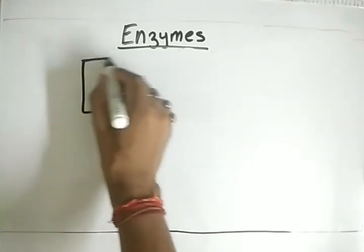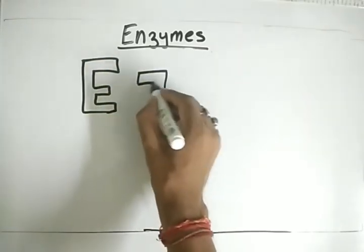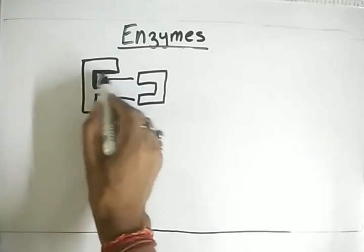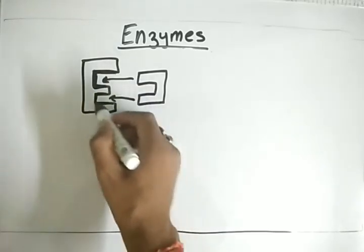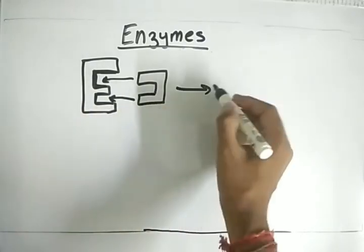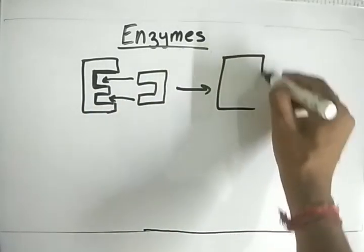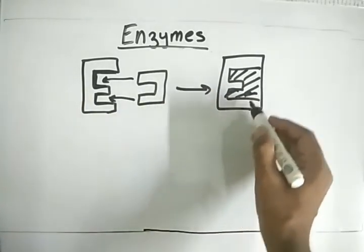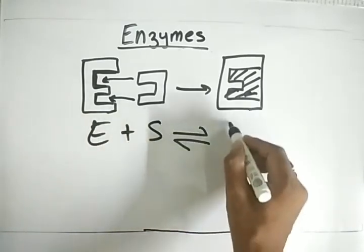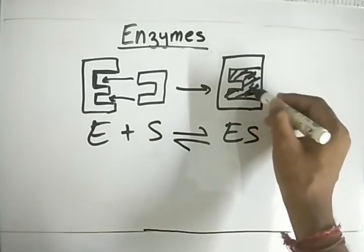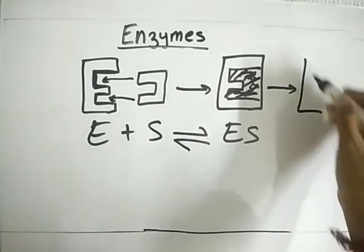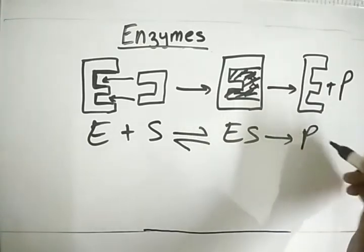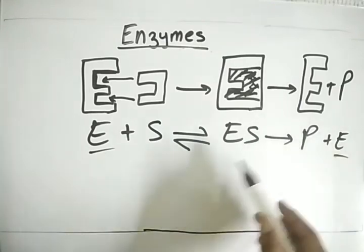Let's see how the enzyme helps. Let E be the enzyme and S the substrate. The substrate enters the active sites of the enzyme, where the reaction occurs — this is the lock and key model. E plus S forms the enzyme-substrate complex ES, which is then converted to product P. The enzyme E is released, giving E plus P. So S is converted to product while ES is formed in between.